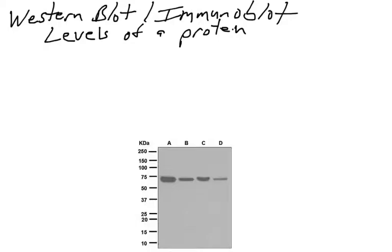We're going to introduce a very common experimental technique called a Western blot, or an immunoblot. Scientists use this technique to measure levels of a protein found in cells. It's a very common technique seen in many scientific research articles, and it's important to understand how an immunoblot works, what it detects, and what the data looks like.